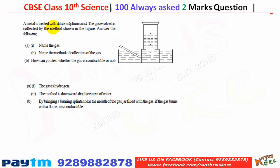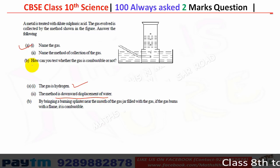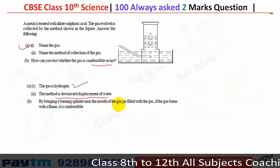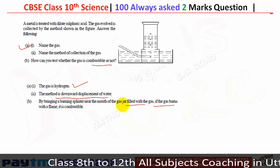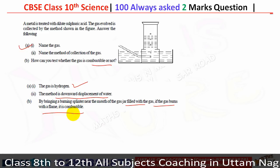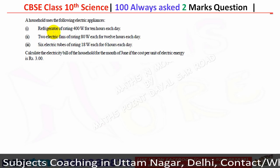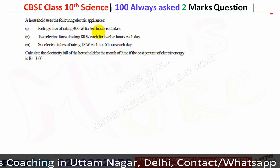A metal is treated with dilute sulfuric acid and the gas evolved is collected. The gas is hydrogen. The method of collecting the gas is downward displacement of water. To test whether the gas is combustible, bring a burning splinter near the mouth of the gas jar — if the gas burns with a flame, it is combustible.